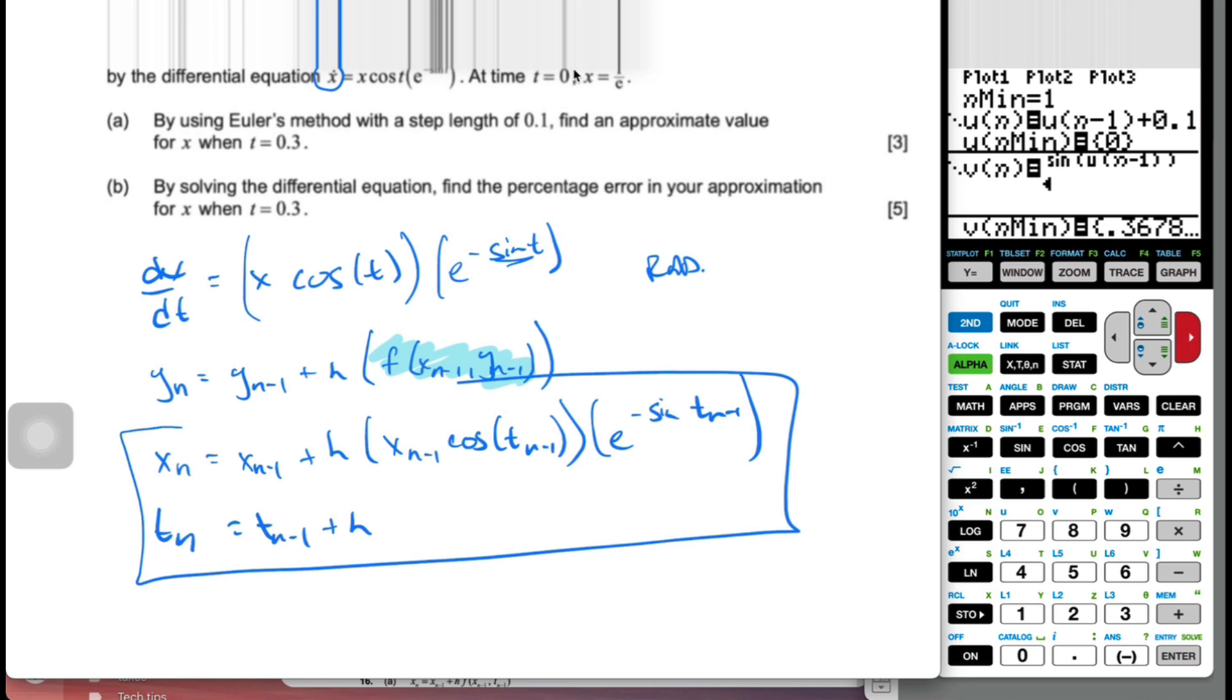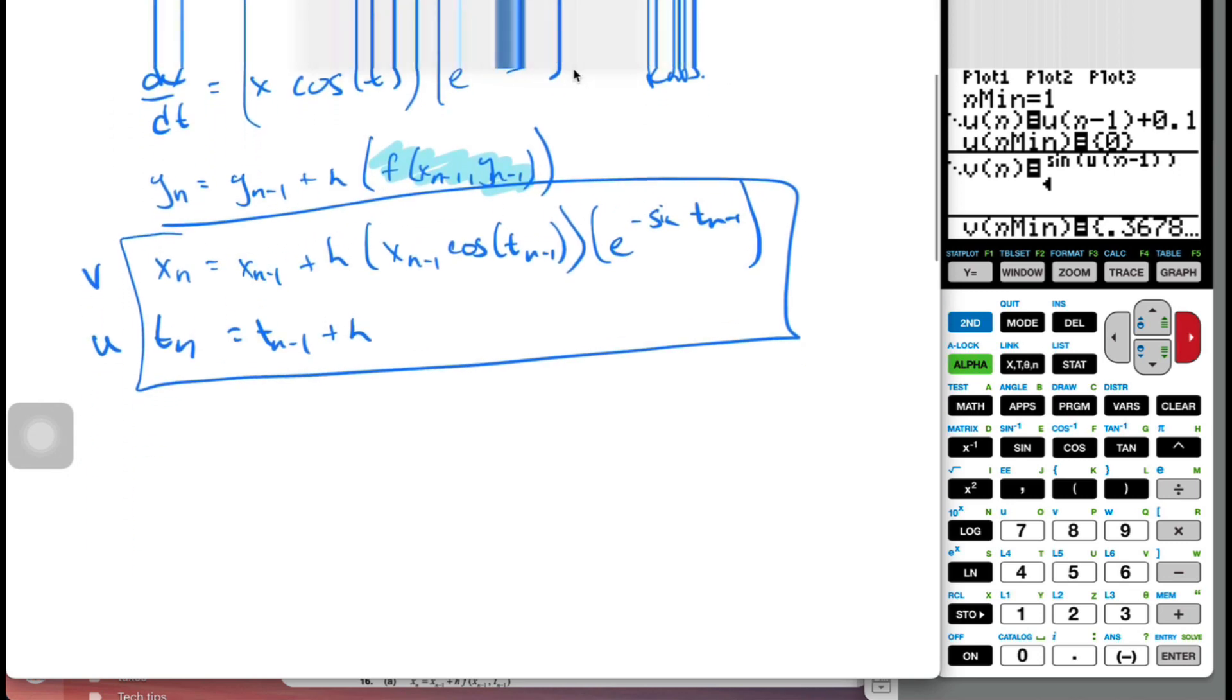I'm going to put this into my calculator. The tricky thing, we have to remember that this is like our x and this is our y. And so in terms of the sequences on our calculator, it really means that this is v and this is u. So I'm going to rewrite it actually on the page as I want to write it. So I will go un will equal to un minus 1 plus 0.1, which is my step.